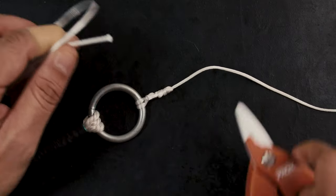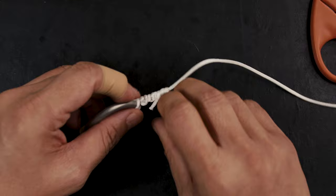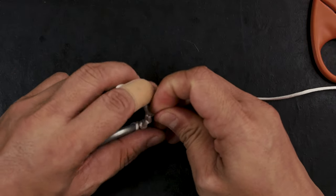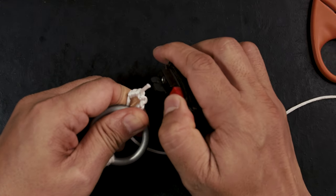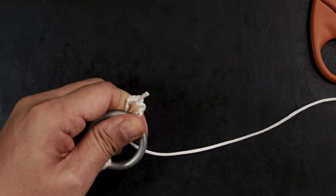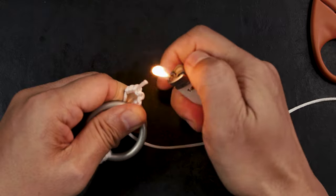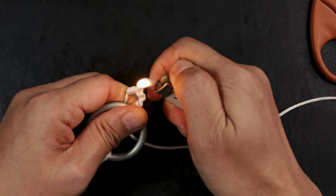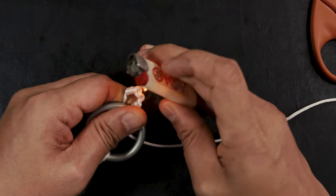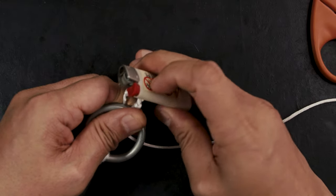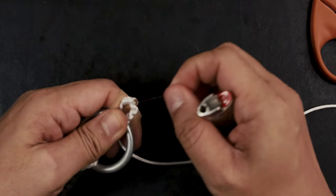And leave a small tag end there. Bend the knot like so, and then take your lighter and light this up. Go like that until it forms a ball. Then just like that.